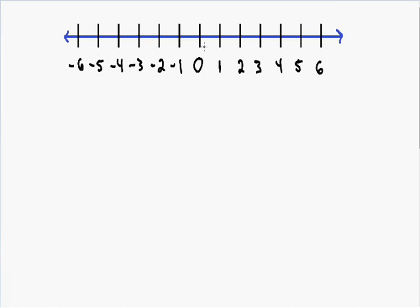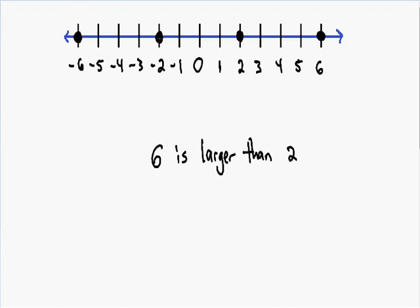The farther right you go on the number line, the larger the number. Six is obviously larger than two because six is farther to the right. Conversely, the farther left you go, the smaller the number. Since negative six is farther to the left than negative two, negative six is less than negative two.